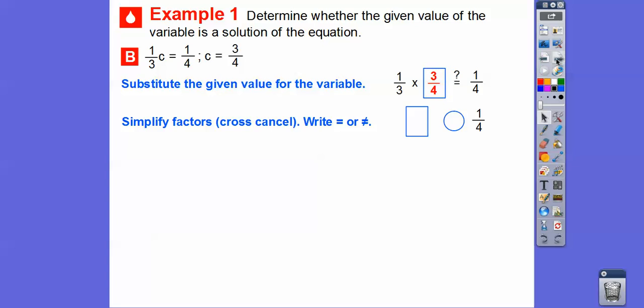And if you guys remember cross-canceling, when you're multiplying fractions, if you have a common factor that can cancel out, 3 goes into 3 in both of these 1 times. So we can cross-cancel and change them to 1s because we divided them by 3. And then we're left with 1 times 1 on top, which is 1, over 1 times 4 on bottom, which is 4. So we're left with 1 fourth.